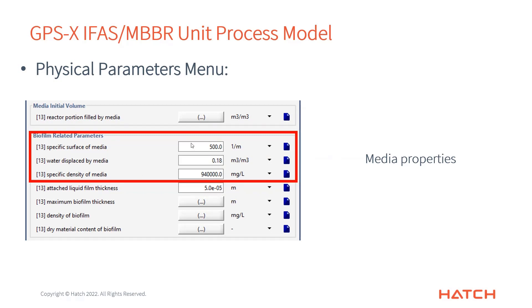Whatever number you feel comfortable using, you might even calibrate this somewhat depending on your data. The water displacement parameter tells us what fraction of the media is actually plastic — 18% is plastic and 82% is holes full of air. We use that to figure out how much water is displaced when the media goes into the tank, so our calculations of bulk liquid volume use the correct number. The density parameter is used for mass balance calculations across the system.